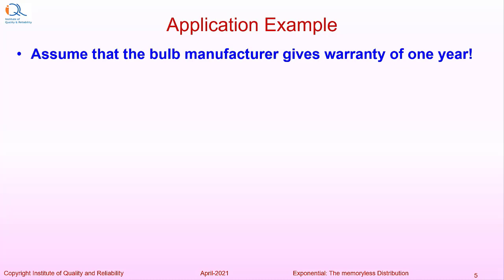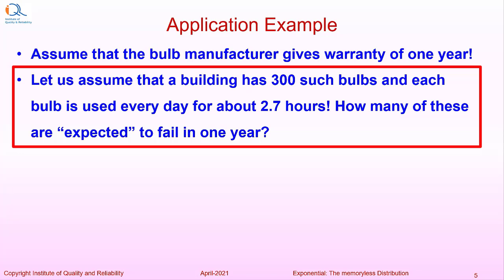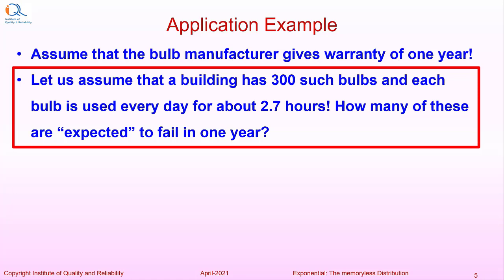We will assume that a bulb manufacturer gives a warranty of one year and a building has 300 such bulbs and each bulb is used every day for about 2.7 hours. How many of these are expected to fail in one year?